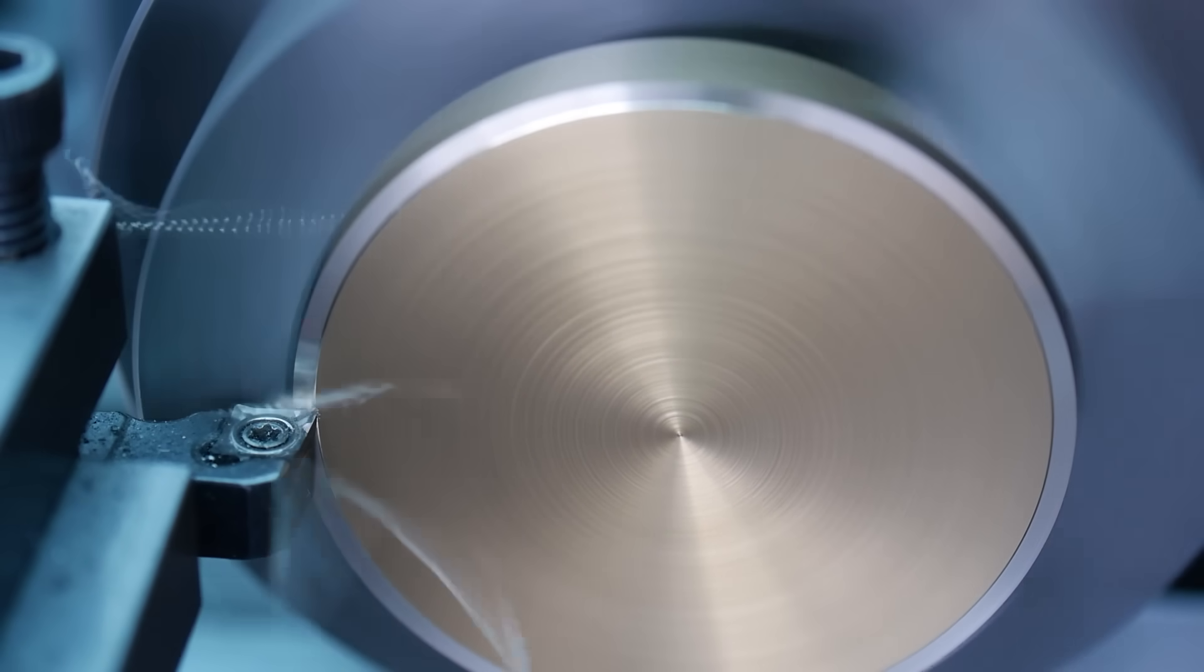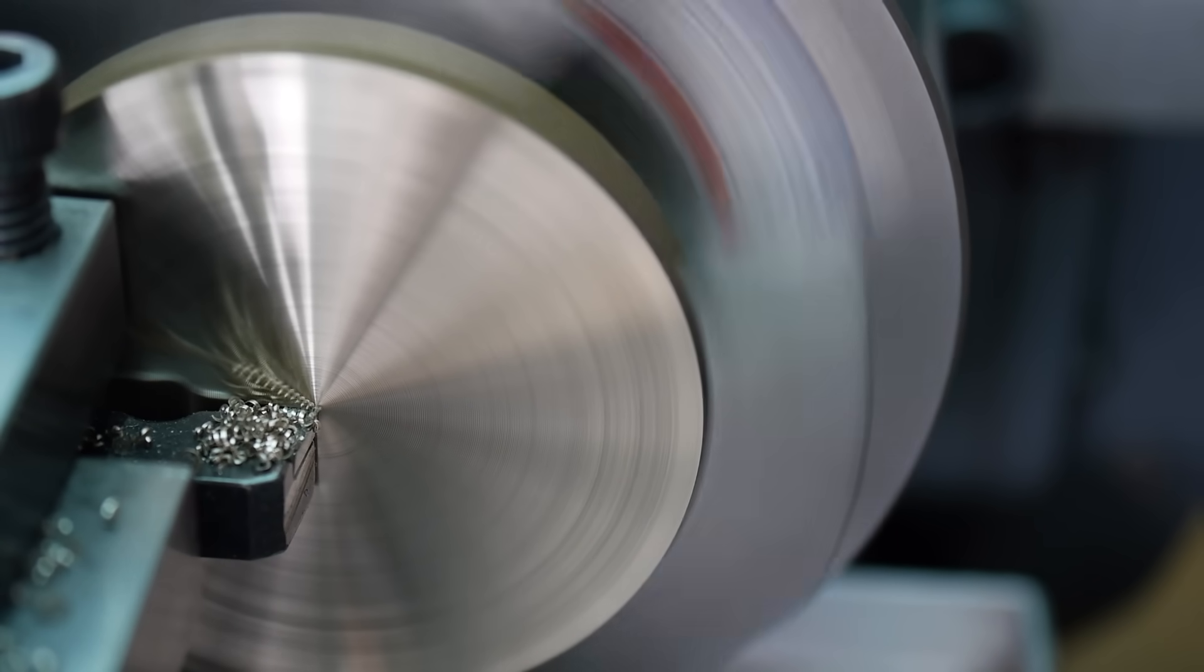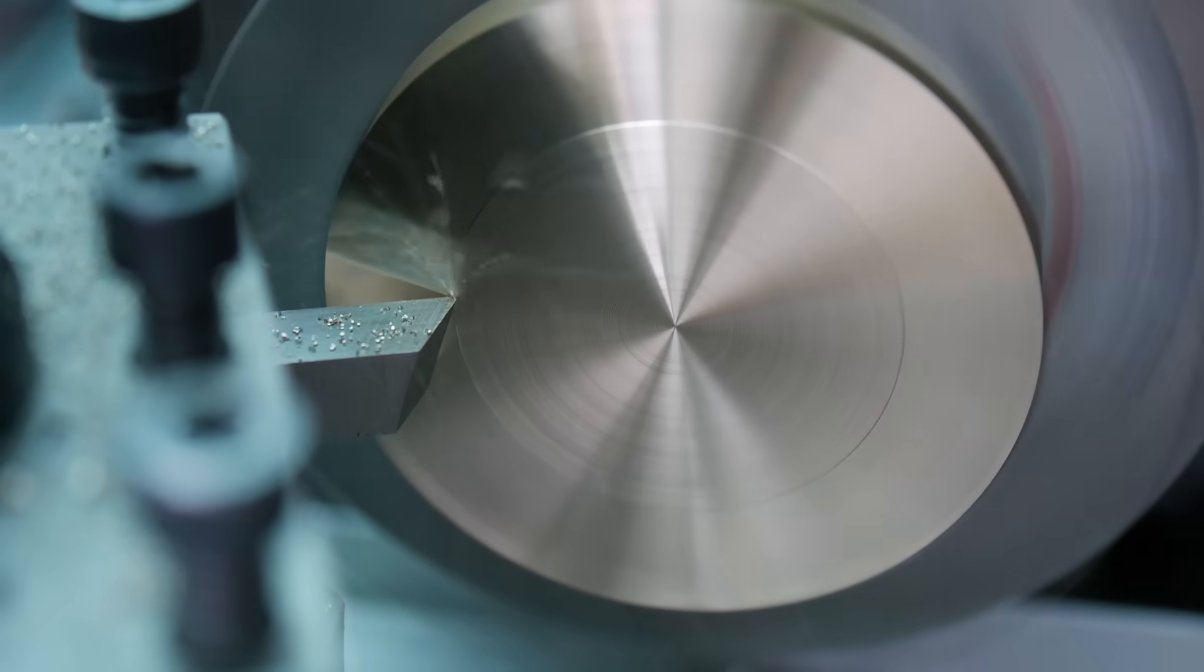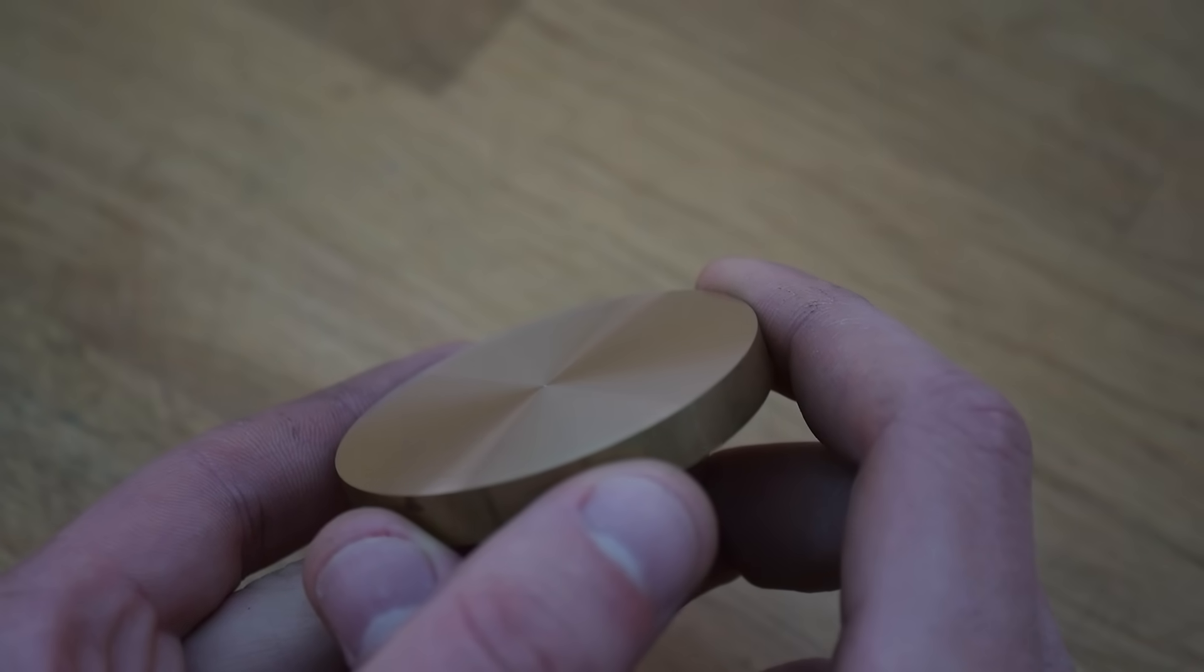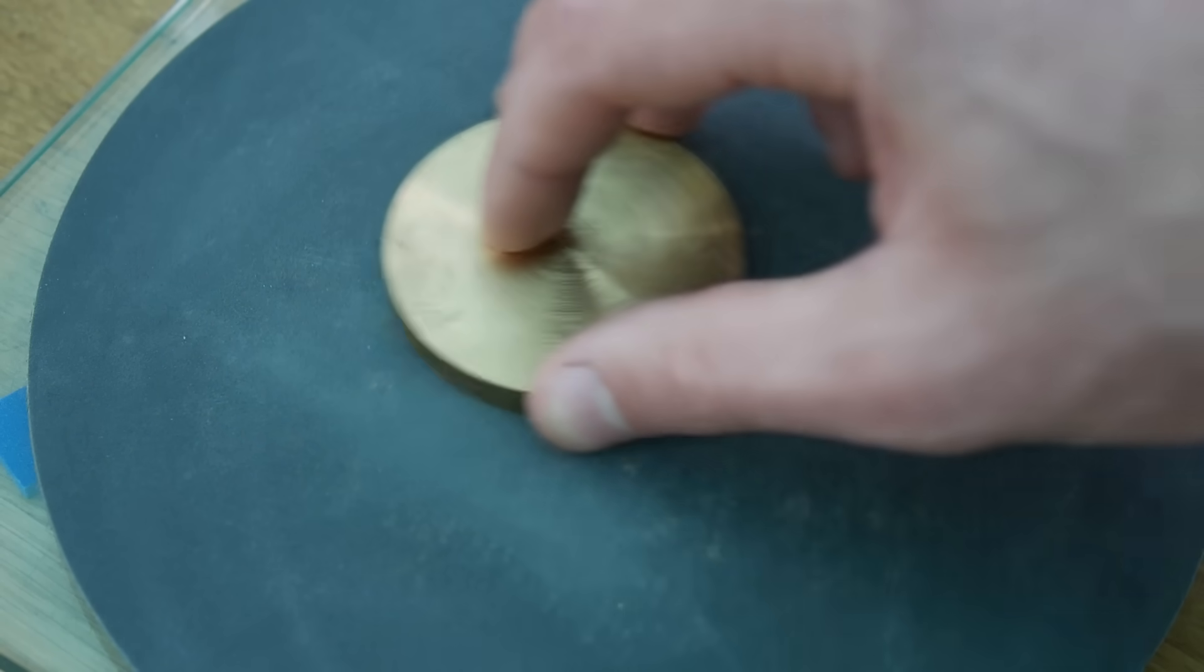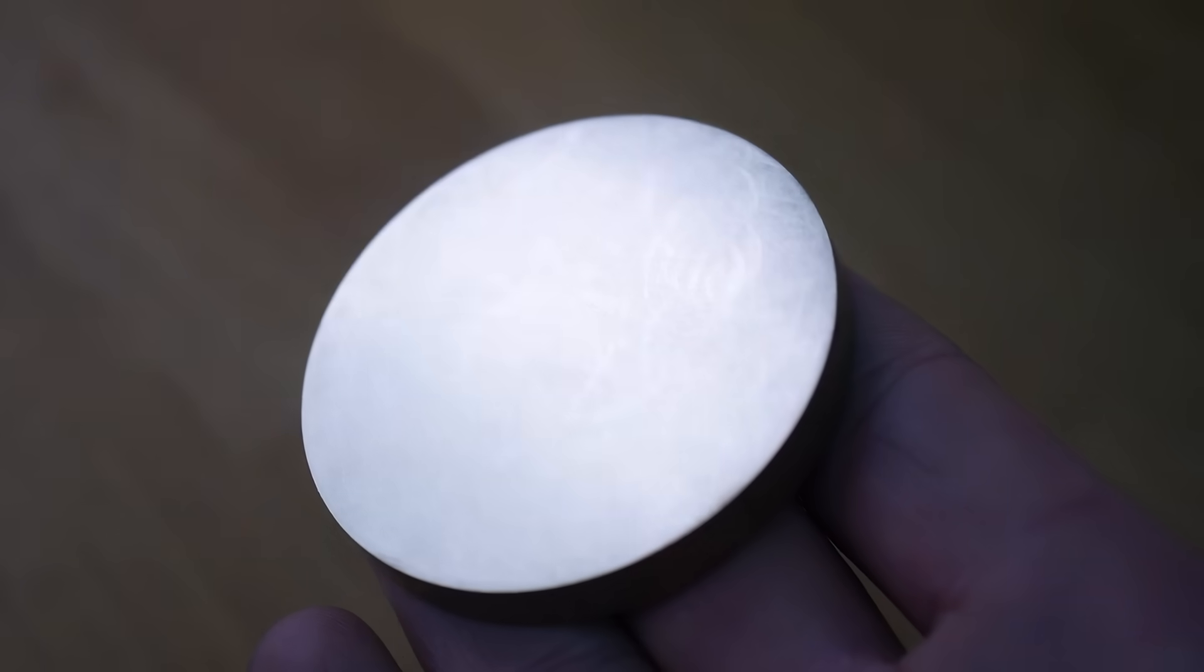In my watch, I'm actually using two barrels to increase the stored energy, which is useful to help drive the tourbillon, but we need a way to position and support these barrels in the watch movement. The component responsible for this is called the barrel bridge, and that's what we're making in this video.